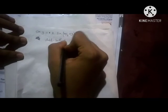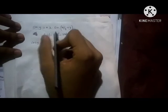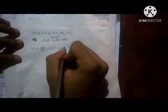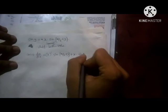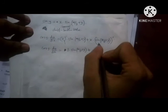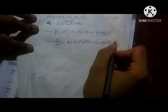Differentiating both sides: the left side gives cos y into dy by dx. The right side, using the multiplication rule, is sin of 5 by 3 plus y plus x into cos of 5 by 3 plus y into dy by dx, all equal to zero.